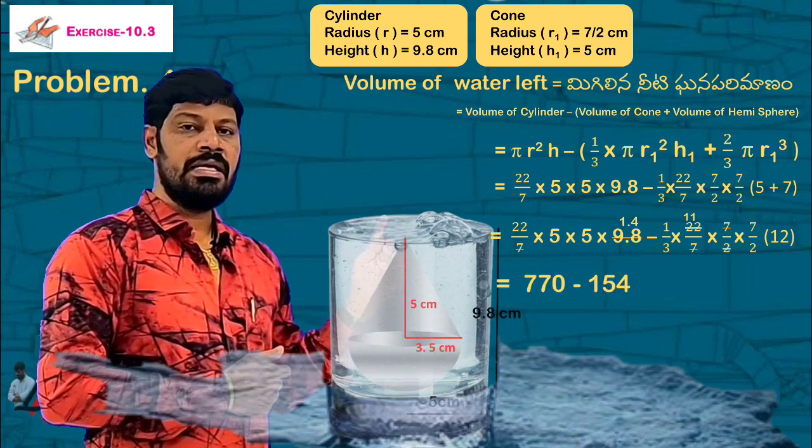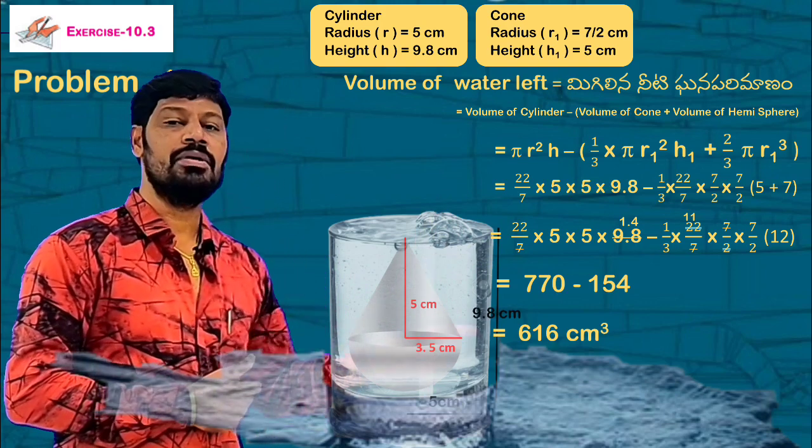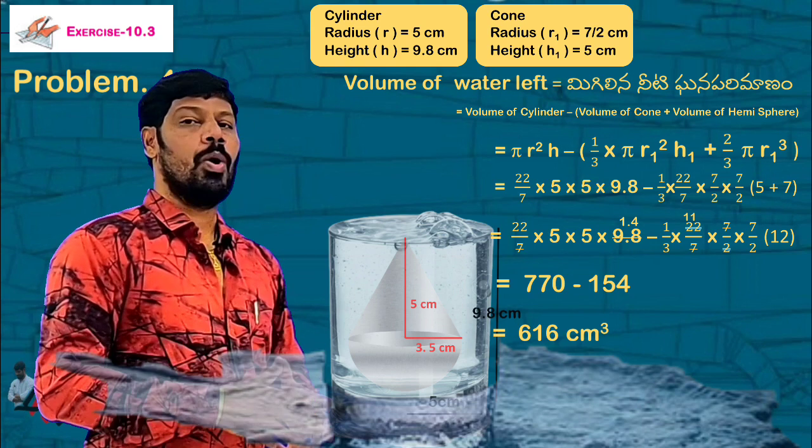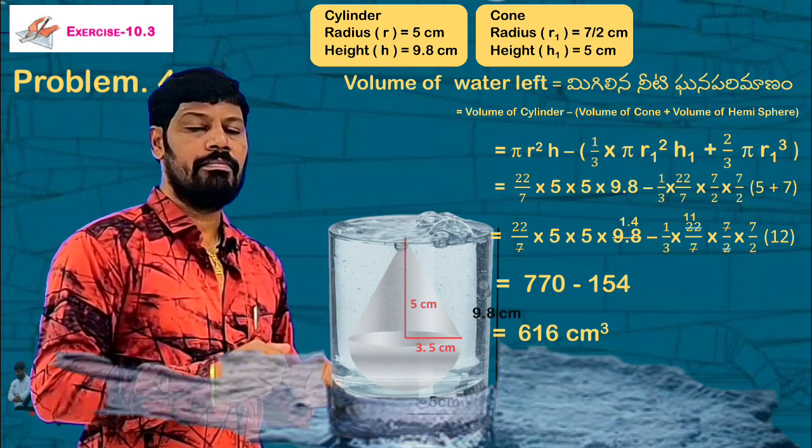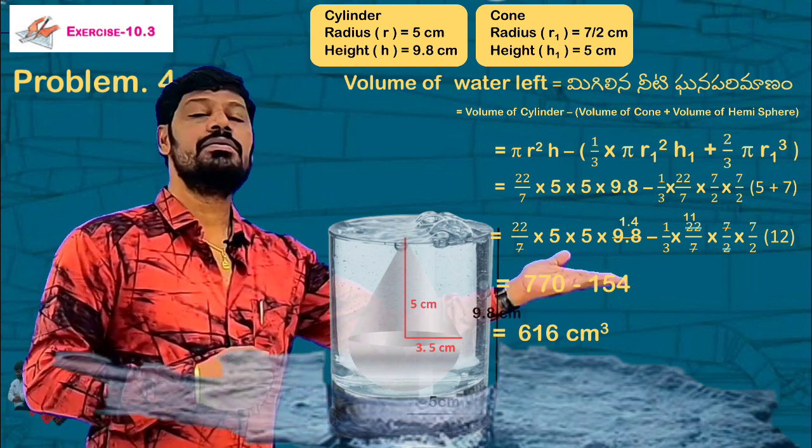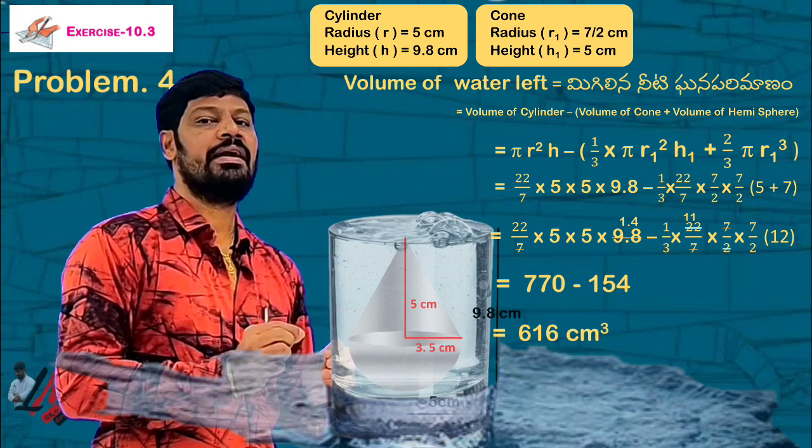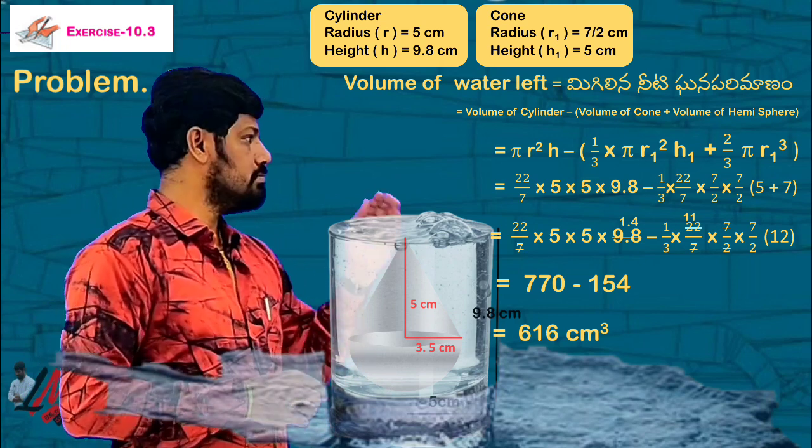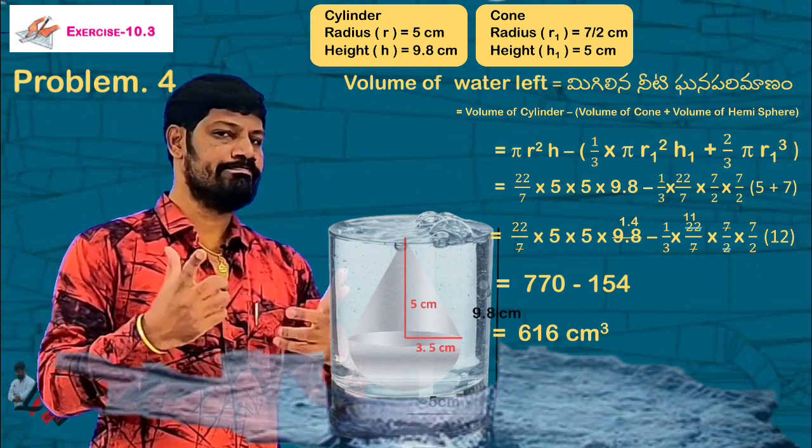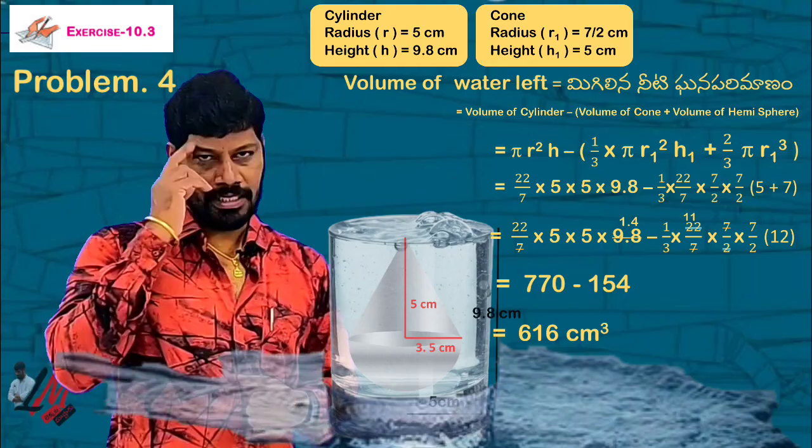This is why we subtract the volume of the cone and hemisphere from the cylinder. The volume of water left in the tub, we have to clear the volume of the cylinder. So I hope you have cleared the volume of the cylinder. Take care, bye-bye, see you later.